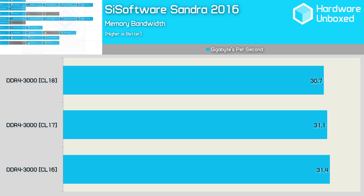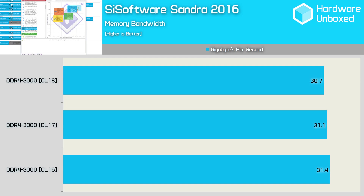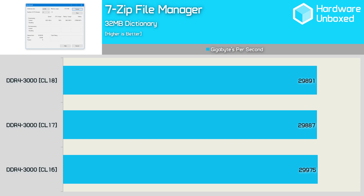One last thing I want to look at briefly are memory timings. As the memory timings are relaxed, memory bandwidth slowly falls away, though the impact of timings on bandwidth isn't nearly as significant as frequency. From CL16 to CL18 we only see a 2% reduction in bandwidth, whereas going from DDR4 3400 to 3200 caused a 4% reduction, and from 3200 down to 2800 a further 7% reduction. In 7-zip we see well under 1% reduction in performance across the various timings, and in Gears of War 4 we see virtually no difference when tweaking memory timings.